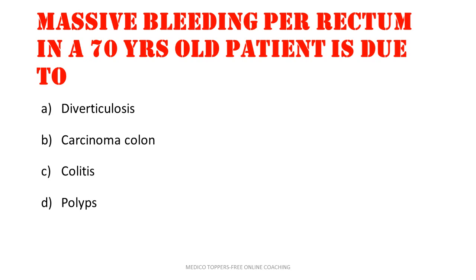Massive bleeding per rectum in a 70-year-old patient is due to: diverticulosis, carcinoma colon, colitis, or polyps. This type of question gives a case and we have to diagnose the condition. The answer is diverticulosis.